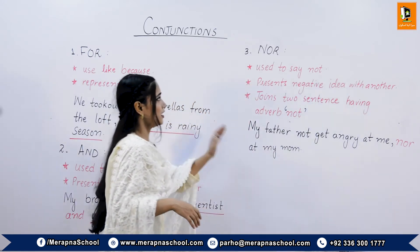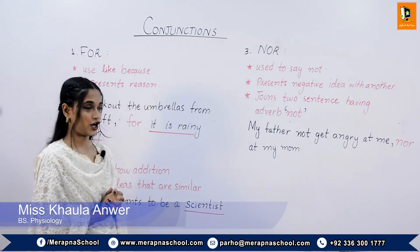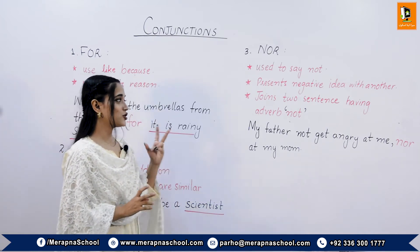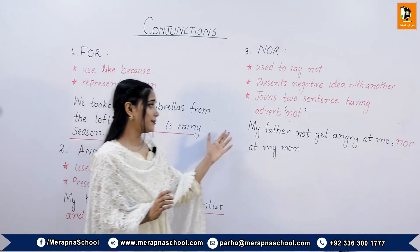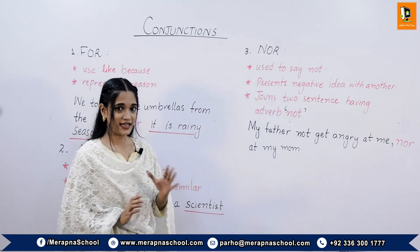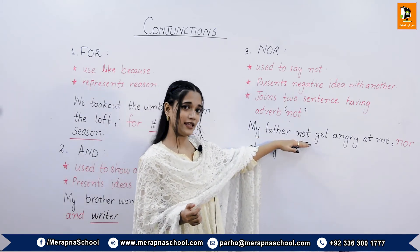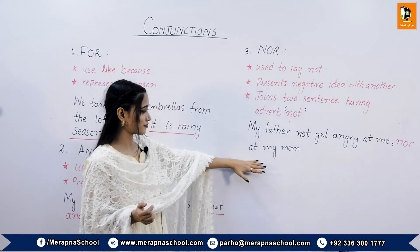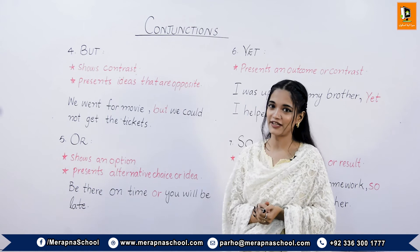The third coordinating conjunction is 'nor'. It is used to say 'not' and it presents a negative idea with another negative idea. It joins two sentences having the adverb 'not'. For example: 'My father did not get angry at me nor at my mom.' In this sentence, 'not' is present in the first half and 'nor at my mom' gives the other negative part.